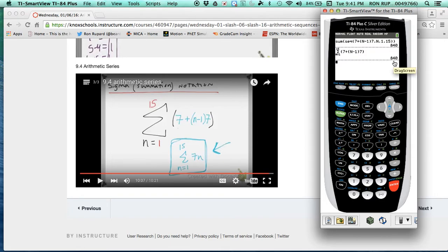So it doesn't really matter. And I believe if you watched that video earlier, there are 15 terms in the sequence. 15 divided by 2 is 7.5. And 7.5 times the first and last term together gives you 840 as well. So any way you do this, 840 is the answer. But that's how you use the calculator. It's that easy. Goodbye.